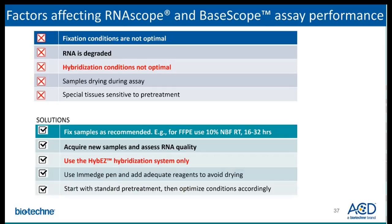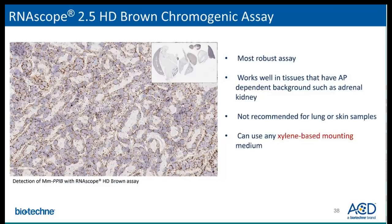In the next few slides, I'll be discussing some key guidelines pertaining to each of the manual assays. The chromogenic brown assay is one of the most robust assays. It is ideal for tissues that have AP-dependent backgrounds, such as kidney, but is not ideal for tissues subject to pigmentation, such as lung or skin samples. We recommend using any xylene-based mounting media for the brown assay.